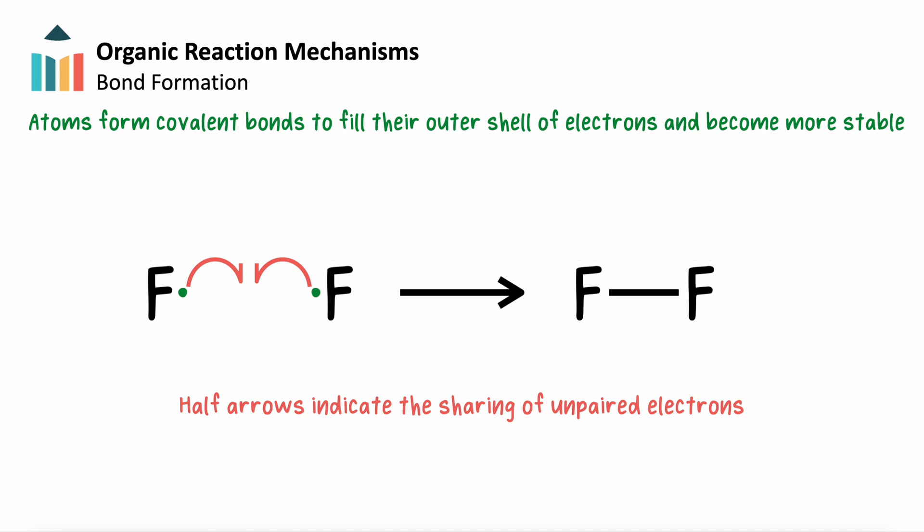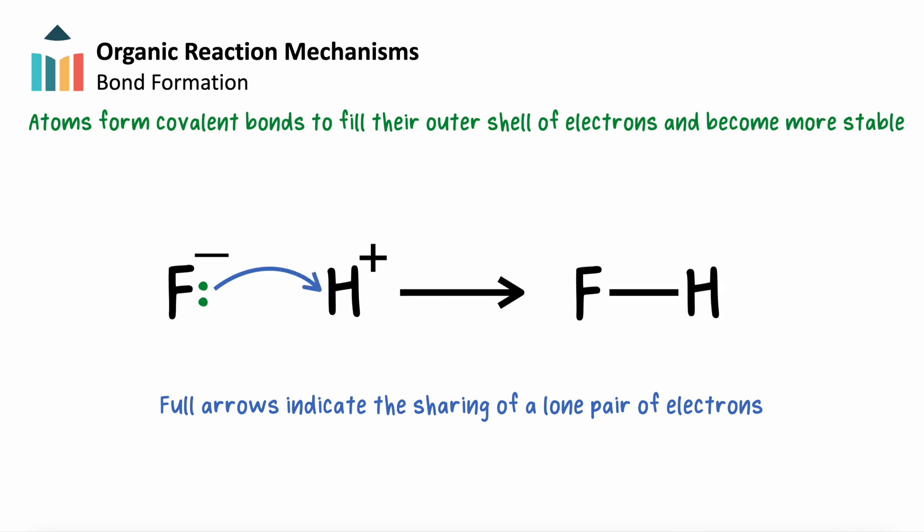A bond may also form when one atom shares an entire lone pair of electrons with another, which we indicate using a full or curly arrow. Here, the electron donor is termed the nucleophile, and the electron acceptor, the electrophile. Notice that the lone pair is drawn as two dots on the nucleophilic atom, and that our curly arrow is drawn from the nucleophile to the electrophile.